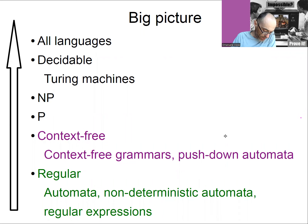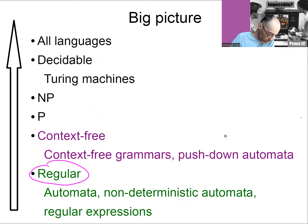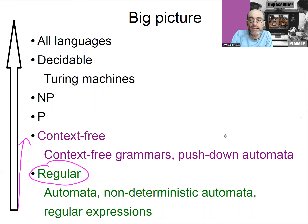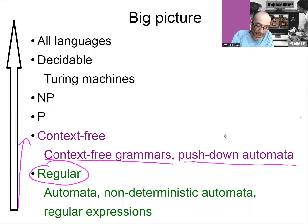Remember that we saw regular languages, we saw automata — deterministic and non-deterministic — and we saw regular expressions, and we saw that all these three models are equivalent, but they also have some limitations. And today we're going to move forward to a stronger, more powerful, more expressive computational model, specifically context-free grammars, and later we're going to see that they're equivalent to pushdown automata, and together they recognize what's called context-free languages.